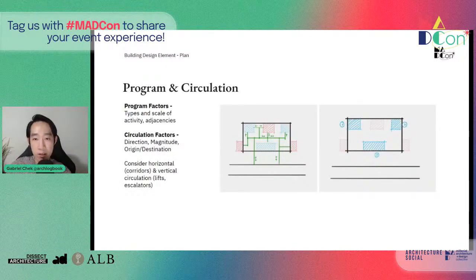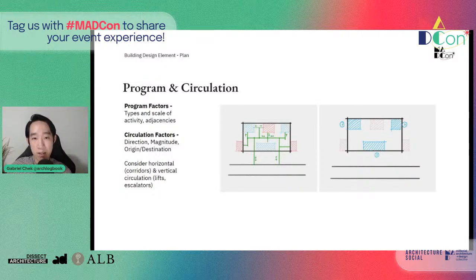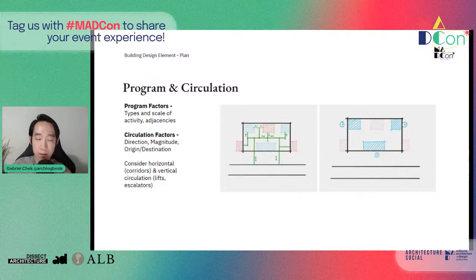Next, we also have the program and circulation. When considering a building design, we think about what programs we are considering — the type of programs, the scale of programs, and the adjacencies. In a real-world situation, we place the cores first, and then think about how to place certain activity spaces interspersed among them, so the cores are easily accessible, for example, for fire safety. For circulation, we consider design factors such as the direction of circulation, the magnitude — meaning how many people are walking along that path — and also the origin and destination of that route. We also consider horizontal circulation as well as vertical circulation, such as lifts and escalators.